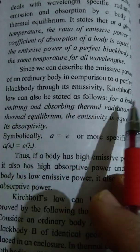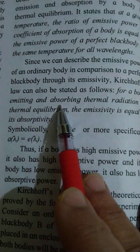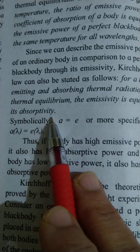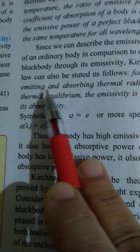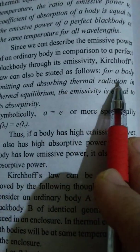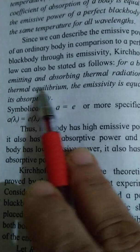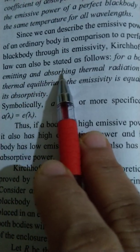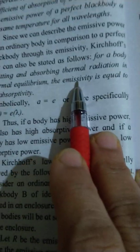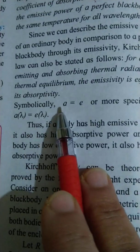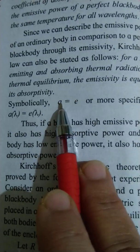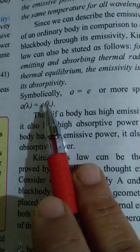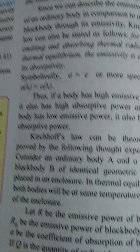For a body emitting and absorbing thermal radiation in thermal equilibrium, the emissivity is equal to the absorptivity. This is the mathematical representation. Symbolically, for all wavelengths, absorptivity a and emissivity e are equal. This is the statement of Kirchhoff's Law.